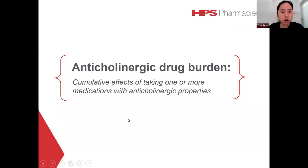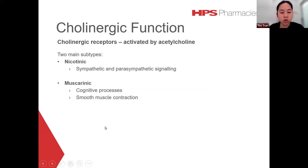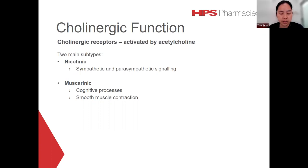Anticholinergic drug burden can be defined as the cumulative effects of taking one or more medications with anticholinergic properties. There are two main types of cholinergic receptor: nicotinic and muscarinic, which can be activated by acetylcholine, a neurotransmitter used by our nervous system to communicate from one part of the body to another. Nicotinic receptors are found in the central, sympathetic, and parasympathetic nervous systems. Muscarinic receptors are found abundantly in the brain, where they are involved in higher cognitive processes like memory and learning.